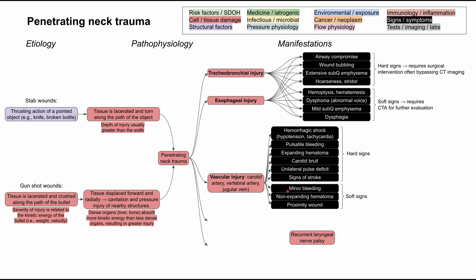The soft signs of vascular injury are minor bleeding, a non-expanding hematoma, and a proximity wound — essentially when the wound is further away from the vasculature, further away from the carotid artery, vertebral artery, and jugular vein.